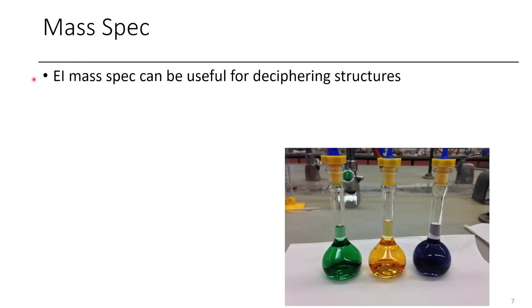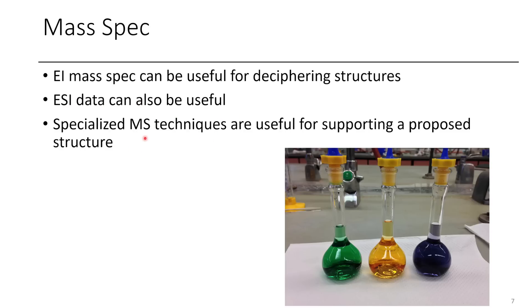If you're doing mass spec, EI mass spec can be really useful for determining structure — you can point out fragments relative to the M peak, the parent ion. For example, a benzene CH2 group is going to give you a 91 peak, indicating a benzyl group was cleaved. ESI can also be useful, more often just for the parent ion. For more specialized cases such as peptides, there are specialized mass spec techniques, and for polymers MALDI would be really useful.